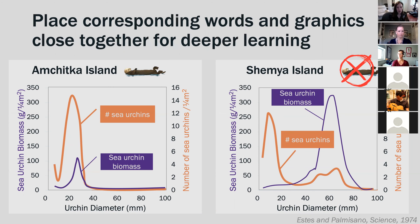The principle applied here is to place corresponding words and graphics closer together for deeper learning. The qualities of the two islands are shown at the top rather than in a long legend at the bottom, with a graphic showing which one has sea otters and which does not. The lines are labeled with the legend right next to them, so your eye doesn't have to go to a caption at the bottom and then figure out what's happening in the graphic. Students might re-watch the video — one of the benefits of video versus live session — and they can follow through what each part of the graph shows because the words are close to the graphs in question.